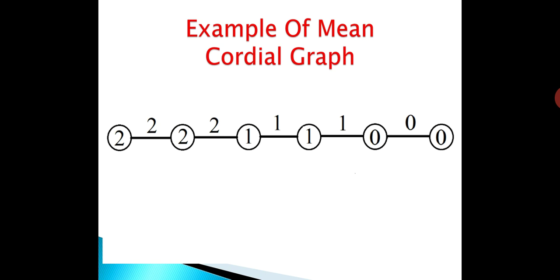The number of vertices labeled with 0, 1, and 2 satisfies the condition |v(i) − v(j)| ≤ 1. Therefore, the given graph satisfies all the conditions of mean cordial labeling, so it is an example of a mean cordial graph.